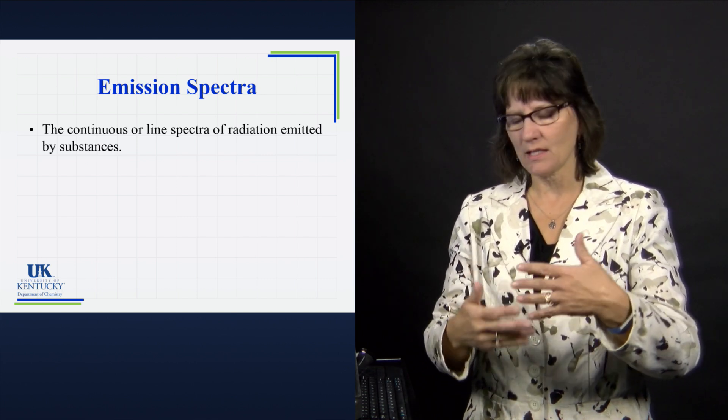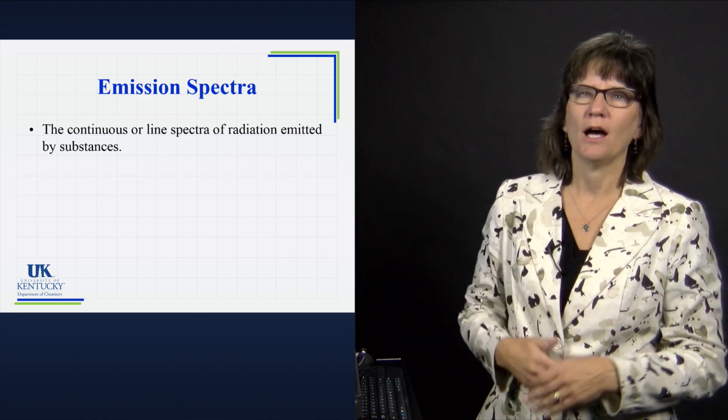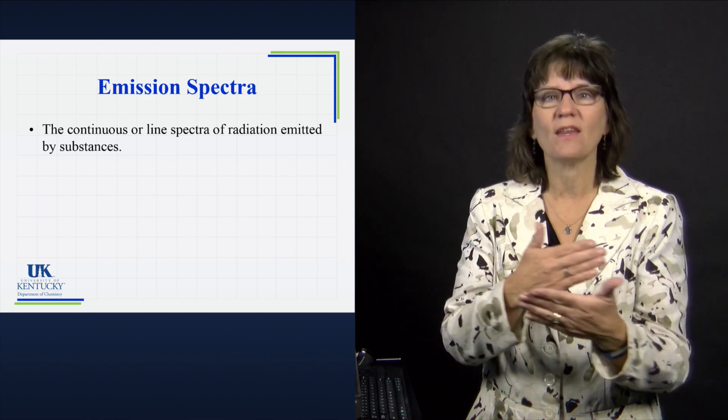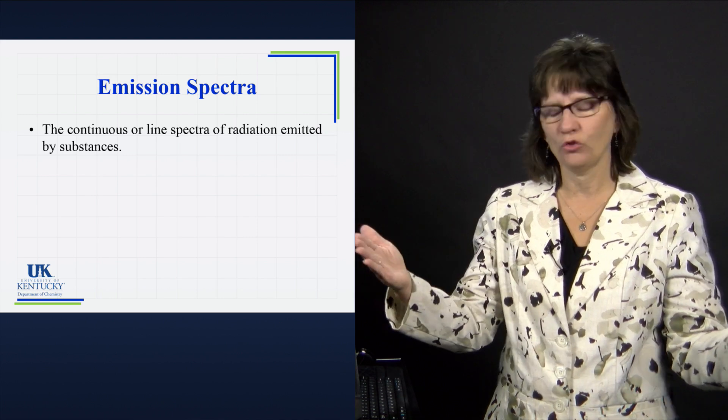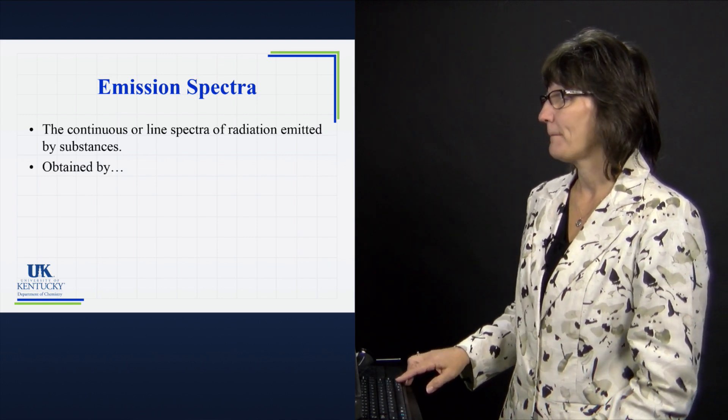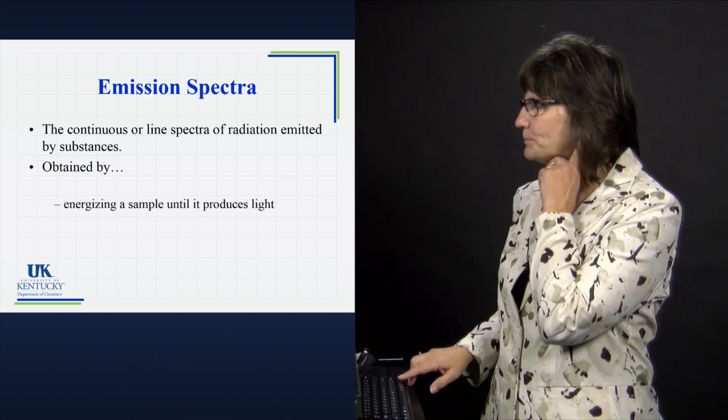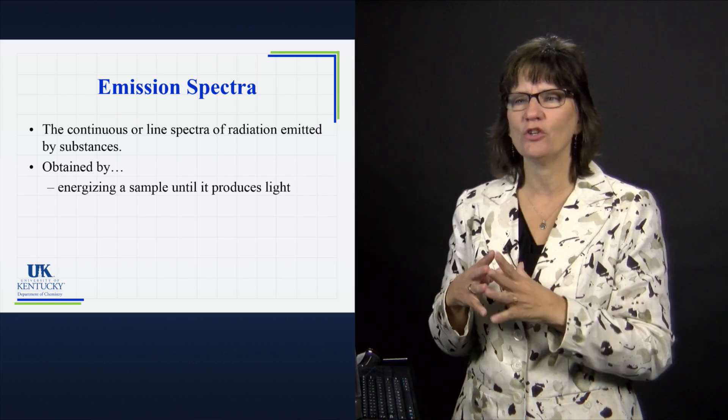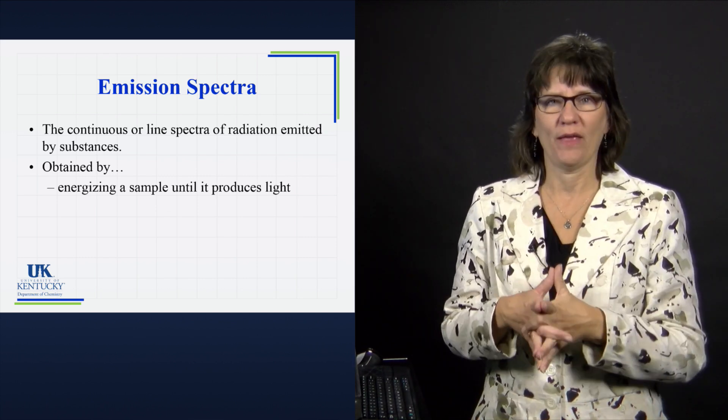And so it's being emitted from a substance and it's being passed through some kind of prism or gradient that causes those wavelengths to spread out. So this is how you get one. First of all, you have to energize the sample until it produces light. How do you do that?